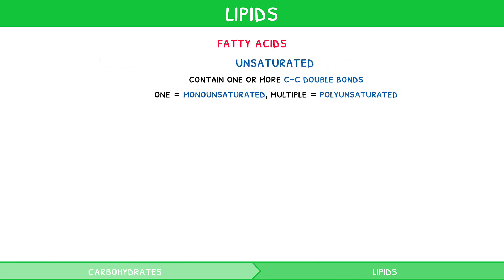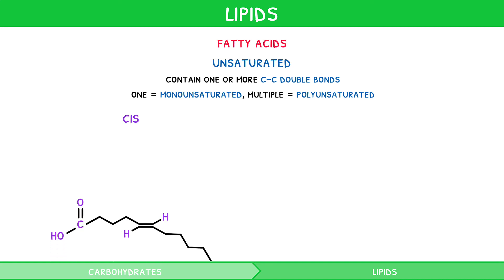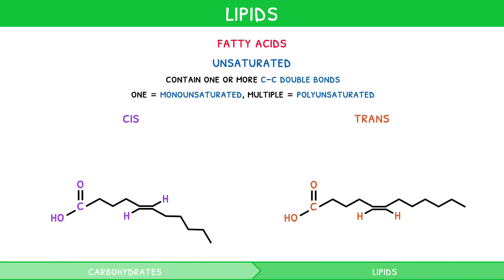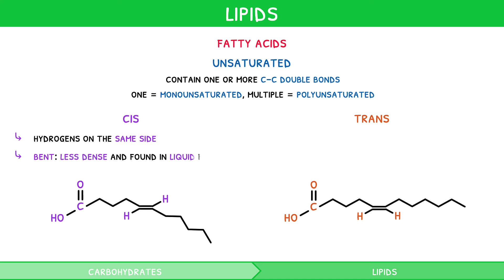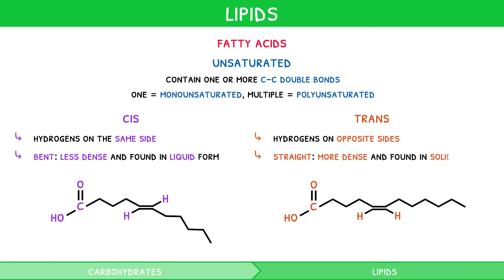Unsaturated fats come in two isomers, cis and trans. Cis isomers have hydrogens on the same side of the double bond. As a result, they are bent, so less dense and thus found in liquid form. Trans isomers have hydrogens on opposite sides of the double bond. As a result, they are straight, so more dense and thus found in solid form.